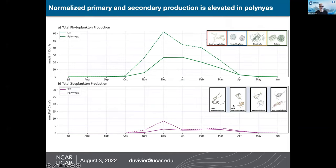Using the model, we can look more closely at what's happening. When we normalize primary productivity per grid cell, we find that in polynia regions — shown as dashed lines — there's higher productivity by all phytoplankton types compared to the sea ice zone in general. We also see elevated secondary production in polynia zones, and we're able to explore why, looking at different types of limitation such as light, nitrogen, or iron.